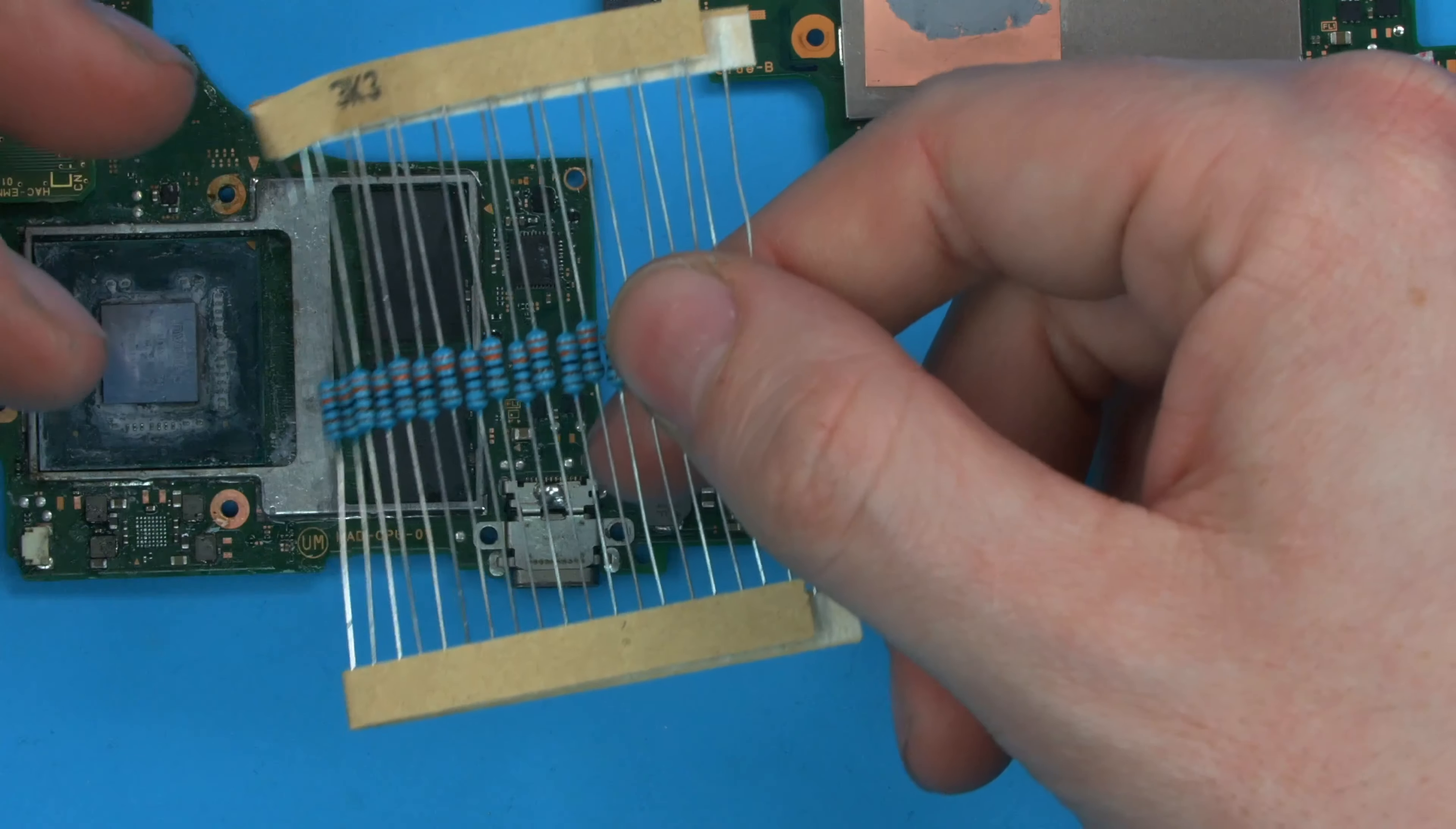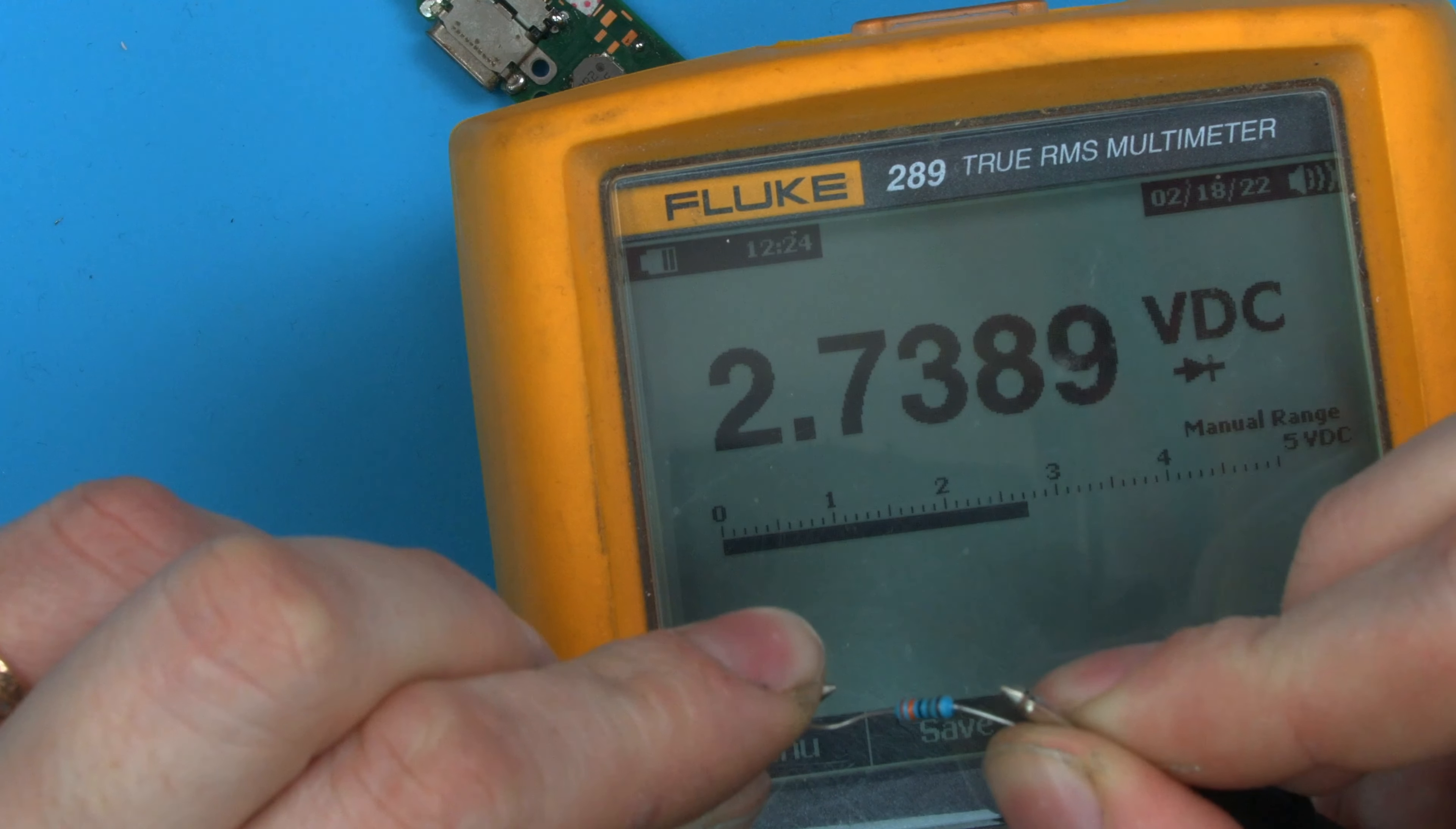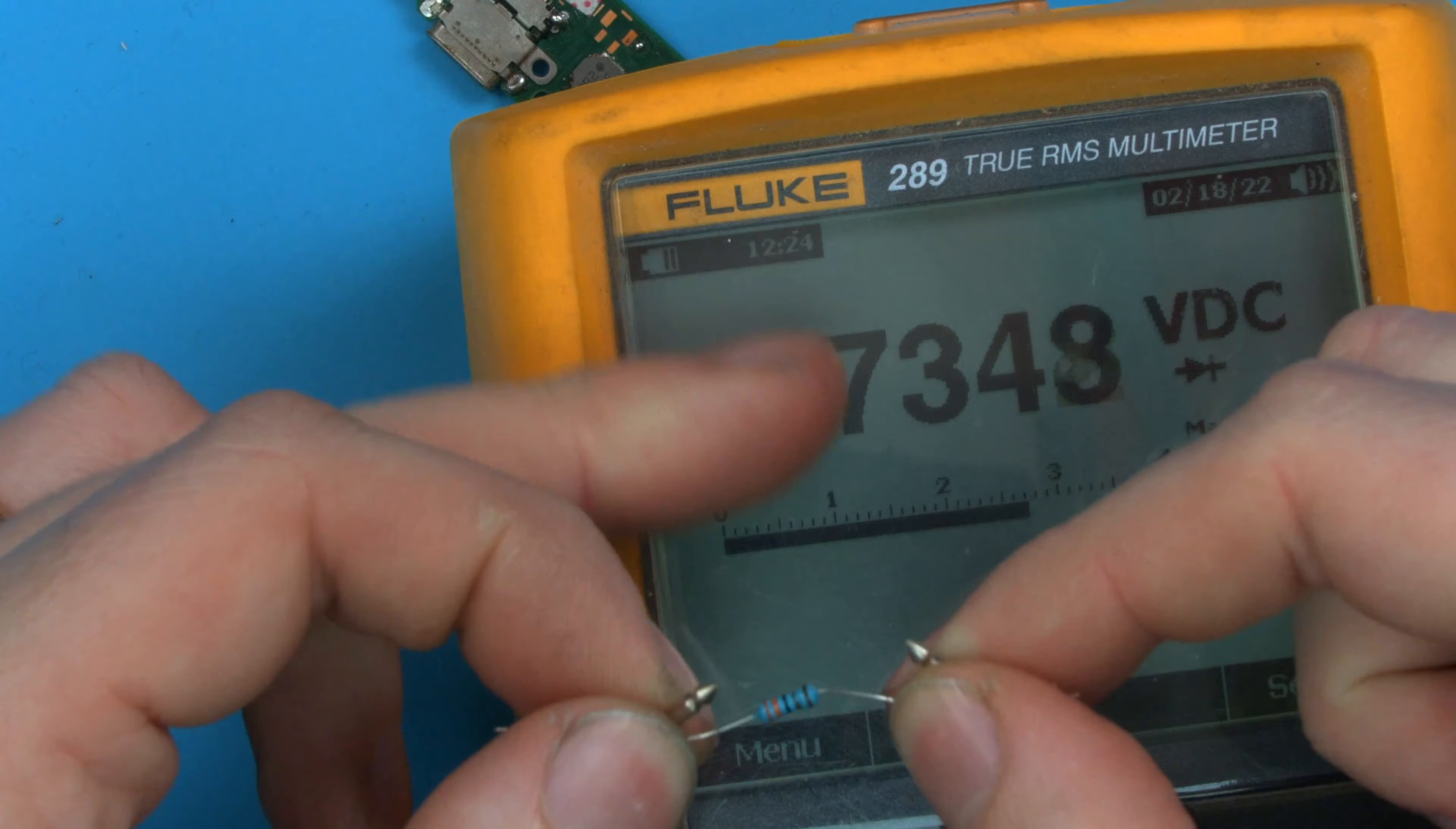So to just explain how that milliamp draw happens, let's just get, say, a 3.3k resistor. Now what happens if we put the meter through this resistor? So if I put the meter on one side, and the meter on the other, you can see I get a voltage of 2.73. If you divide 2.73 by the 3,300 ohm resistor here, you'll find out that you get roughly 0.001, which is one milliamp. So what the meter is doing is pushing a milliamp through the circuit, and then using VIR to calculate the voltage.